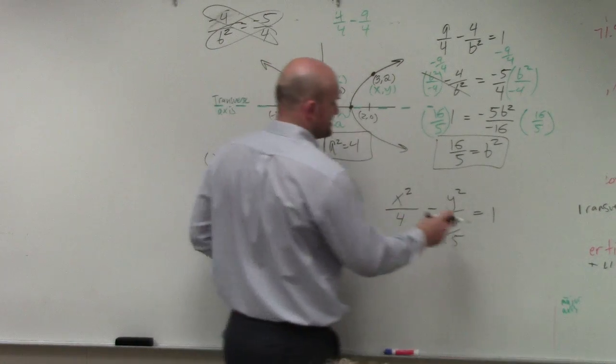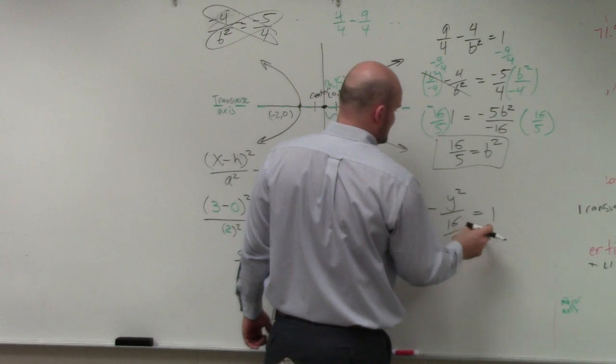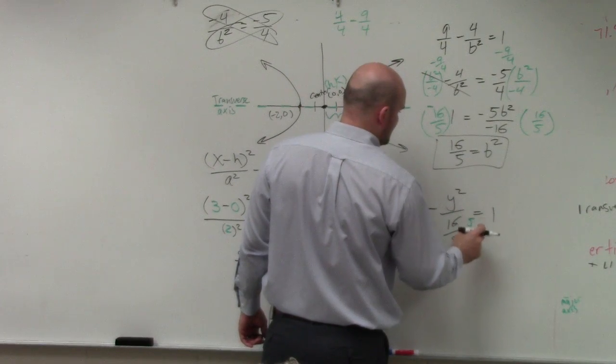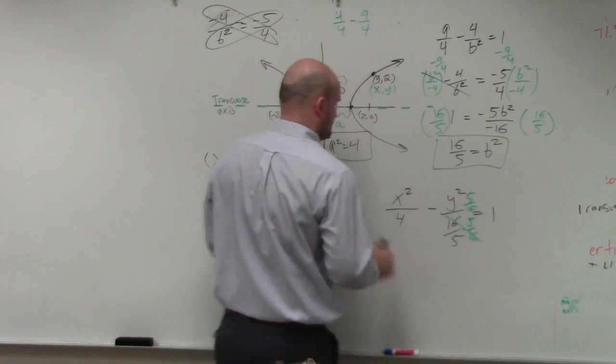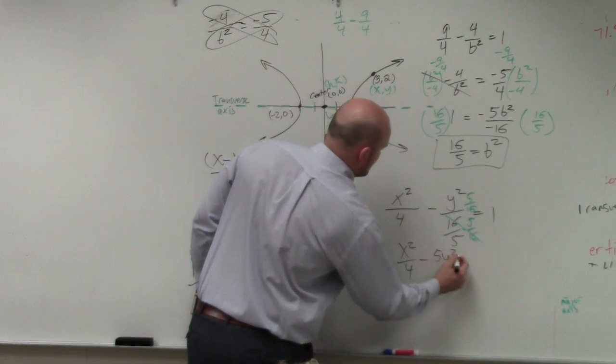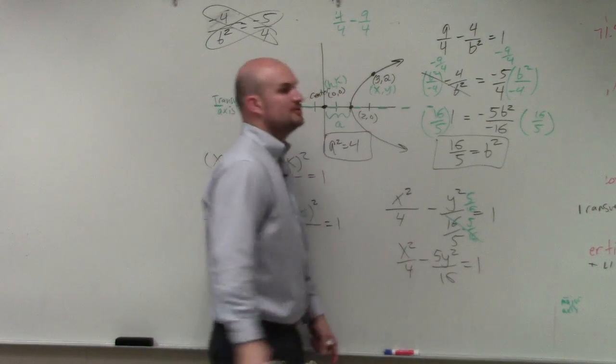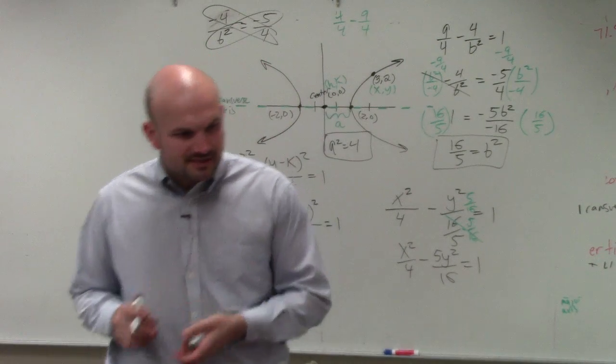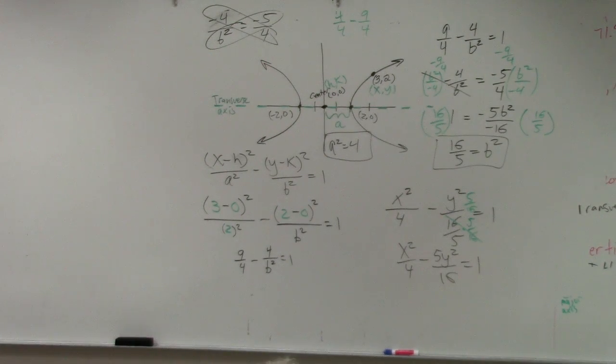So what I can do, though, is if I multiply this exact same fraction by the reciprocal, as long as you're multiplying the fraction top and bottom by the same number, you're not changing the number. So therefore, my final answer is x squared over 4 minus 5y squared over 16 equals 1. Don't really worry so much about the fraction at the end. I doubt you guys are going to have something that difficult, but you might. So it's good to go over it.